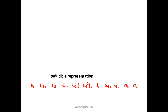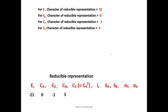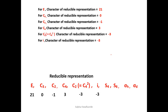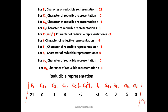Summing up all these results, the characters of the reducible representation are: E = 21, C₃ = 0, C₂ = −1, C₄ = 3, C₂(= C₄²) = −3, I = −3, S₄ = −1, S₆ = 0, σH = 5, σD = 3. These numbers form the reducible representation, represented as χr.